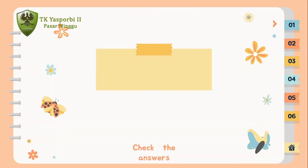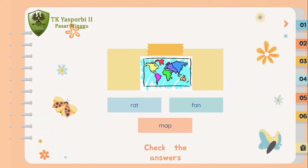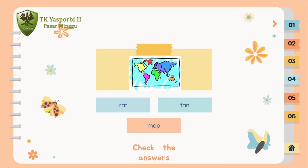The last — what is the picture? Red, Fan, Map. And the correct answer is Map.